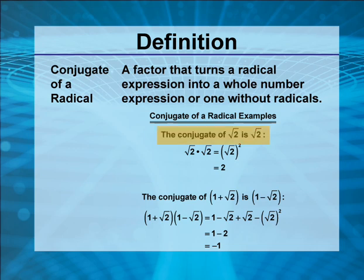The conjugate of square root of 2 is square root of 2. This means that when you multiply square root of 2 by itself, you get square root of 2 squared, or 2, thus removing the radical sign.